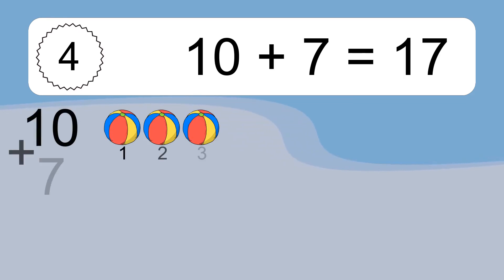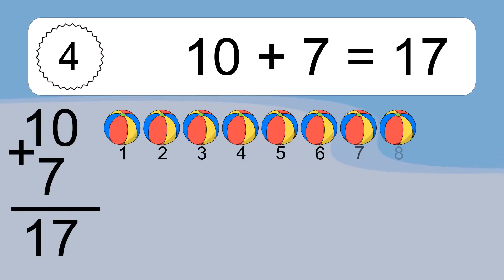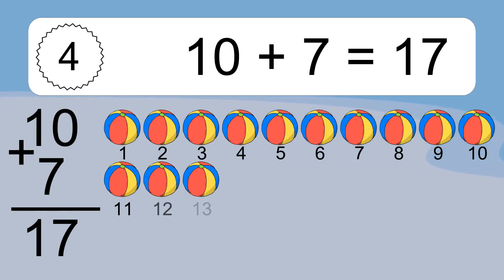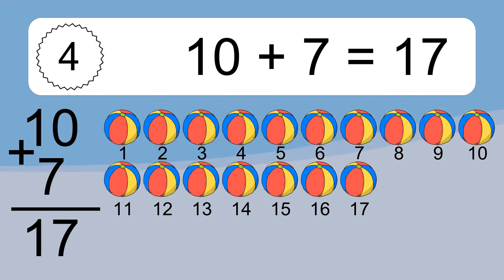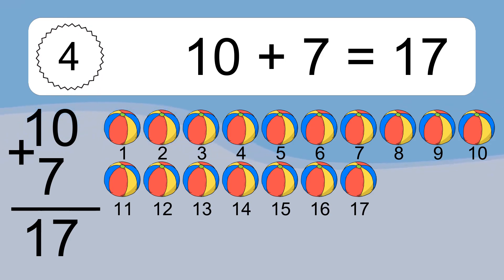10 plus 7 equals what? Let's count it: 1, 2, 3, 4, 5, 6, 7, 8, 9, 10, 11, 12, 13, 14, 15, 16, 17.